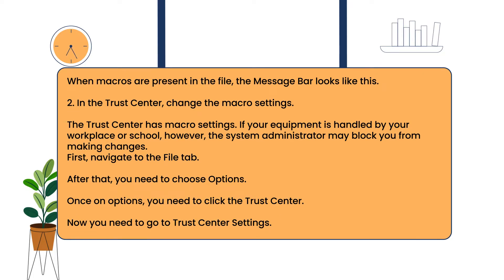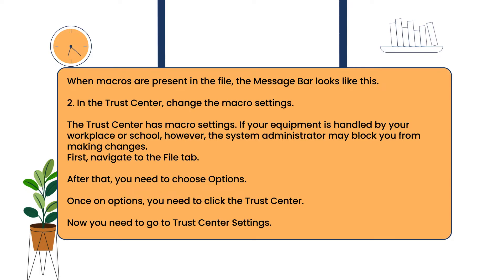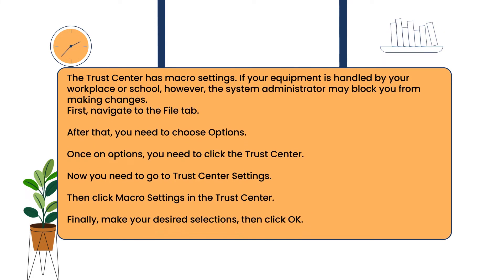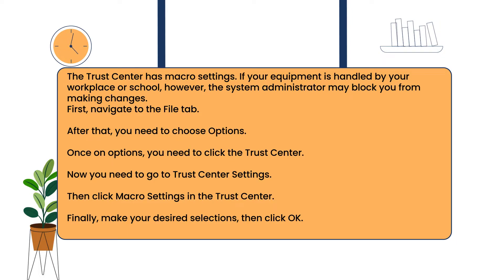Method two: in the Trust Center, change the macro settings. The Trust Center has macro settings. If your equipment is managed by a workplace or school, however, the system administrator may block you from making changes. First, navigate to the File tab. After that, choose Options. Once in Options, click on the Trust Center. Now, go to Trust Center Settings. Then, click on Macro Settings in the Trust Center. Finally, make your desired selections and click OK.